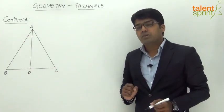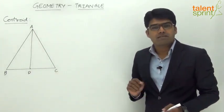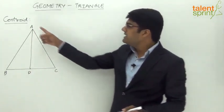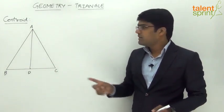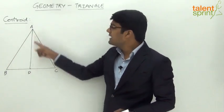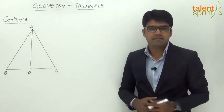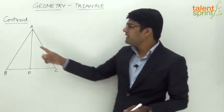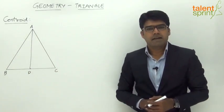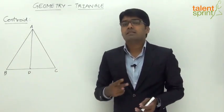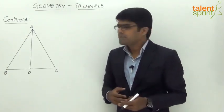One important point to note is that every median will divide the triangle into two equal parts. So here the median AD has divided triangle ABC into two equal parts: triangle ABD and triangle ADC. The area of each of these triangles is equal — the area of triangle ABD will be equal to the area of triangle ADC. Likewise, the other two medians also divide the triangle into two equal parts.